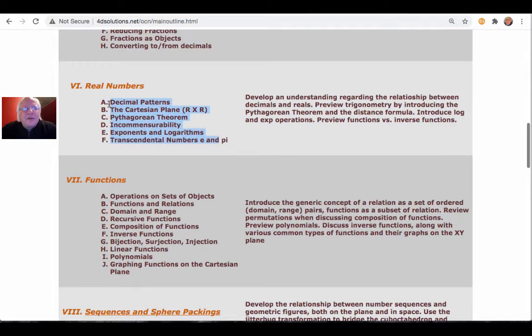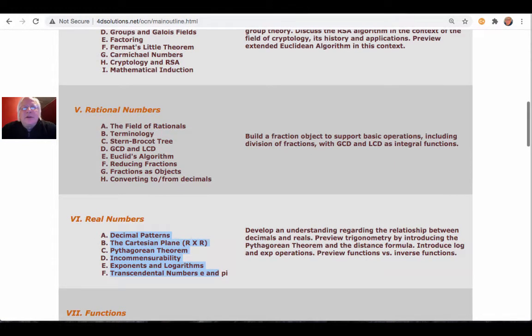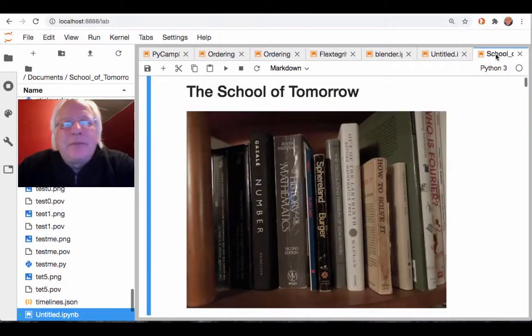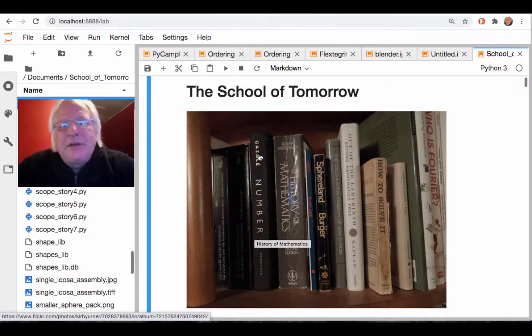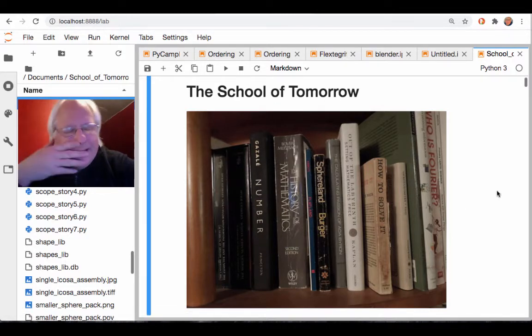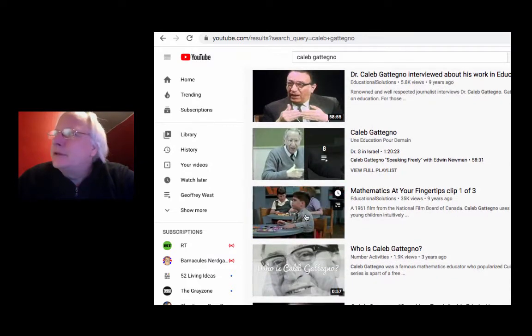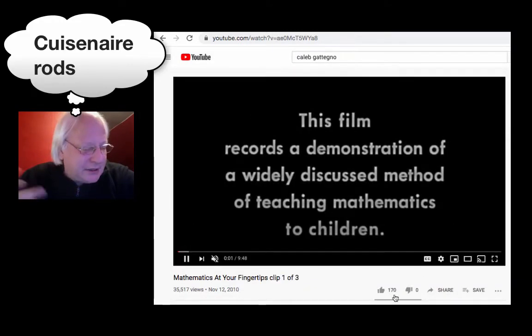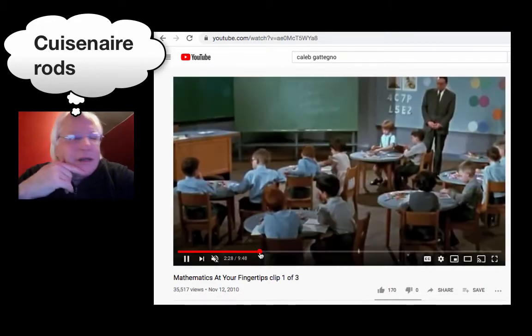Incommensurability is part of this outline. All this stuff is very conventional. When I show you my bookshelf at the opening web page for the school, there's Midhat Gazale, Egyptian heritage, similar to the Cuisenaire guy.